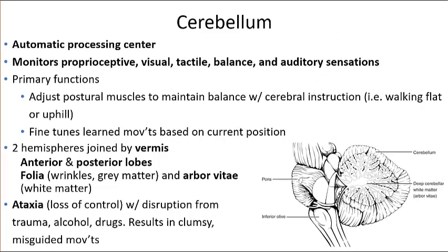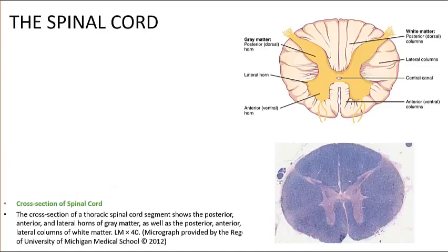The cerebellum is an autonomic processing center accounting for about 11 percent of the brain's mass. Though partially hidden by the cerebral hemispheres, it is the second largest structure in the brain. It functions in the coordination and modulation of motor commands from the cerebral cortex, and is important for maintaining balance and equilibrium. It is divided into two hemispheres separated by the vermis, and into anterior and posterior lobes separated by the primary fissure. The white matter is called arbor vitae, surrounded by gray matter called the cerebellar cortex.